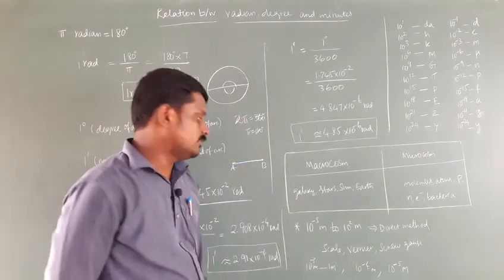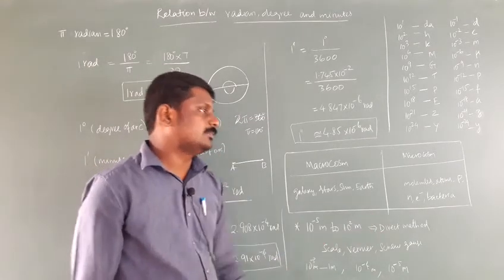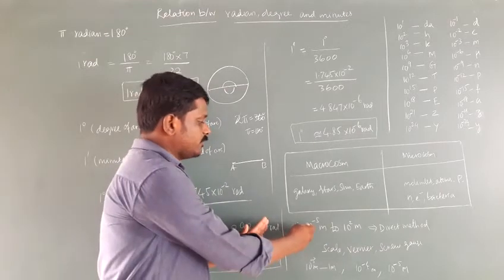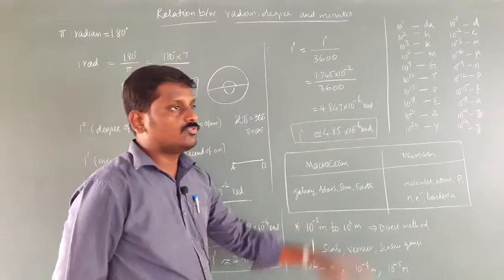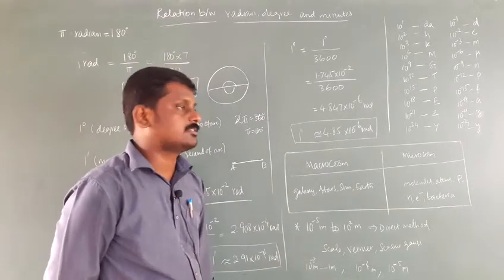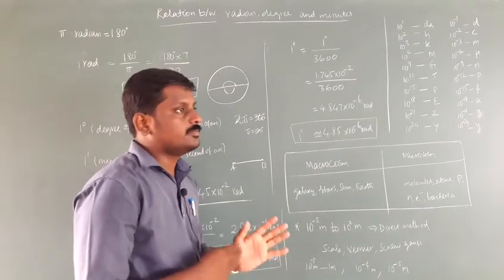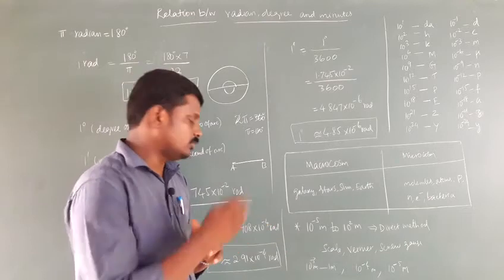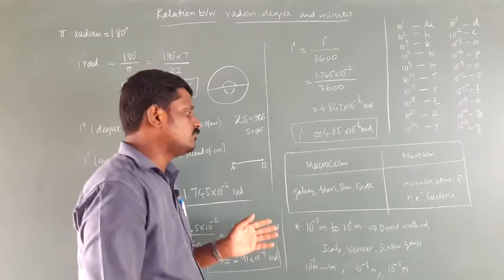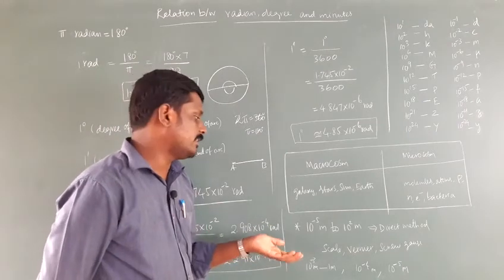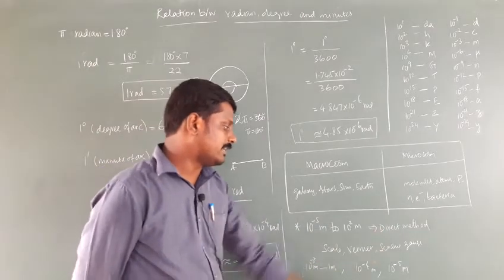We can measure lengths from 10⁻⁵ to 10² meters using direct methods. Beyond 10⁻⁵ meters on the smaller side, or above 10² meters on the larger side, we need to go for indirect methods, which we will see in the next classes — such as astronomical distances or the radius of an atom.